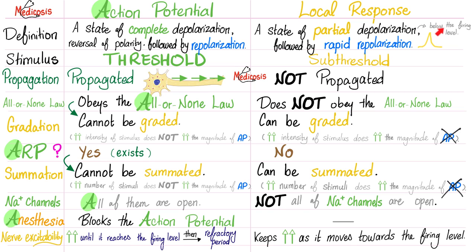My Egyptian professor's mnemonic: the action potential has four A's. First A: it obeys the All-or-none law, therefore cannot be graded. Second A: it has an Absolute refractory period, therefore cannot be summated. Third A: All sodium channels are open. Fourth A: Anesthesia will block it.